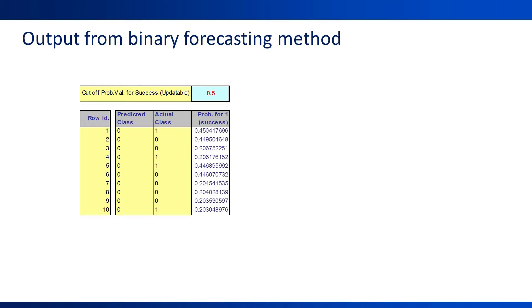Here's an example of output from some binary forecasting method. We see a column called predicted class, which is our binary forecast. This binary forecast is typically the result of comparing the forecasted probability with a cutoff value selected by the user.